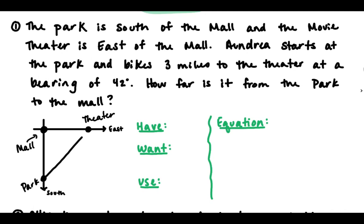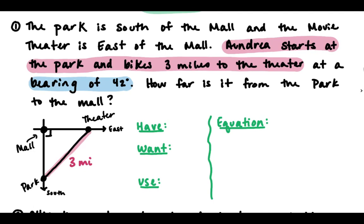So let's go through and label our triangle. First piece of information is that Andrea starts at the park and bikes three miles to the theater. So park to theater, right here, that's three miles. Second piece of information is that she's biking at a bearing of 42 degrees. So bearing is angle measured clockwise from north. So right here is our bearing.